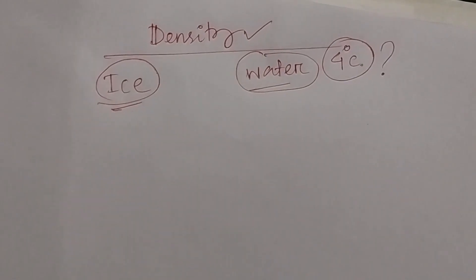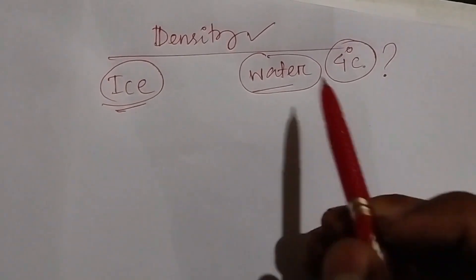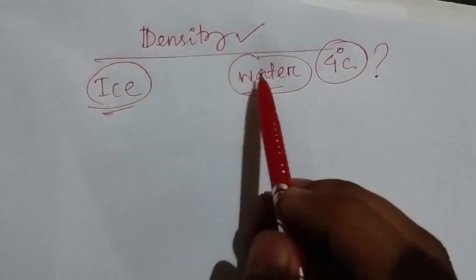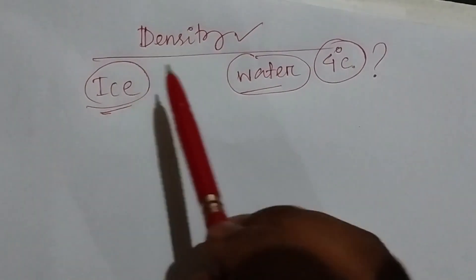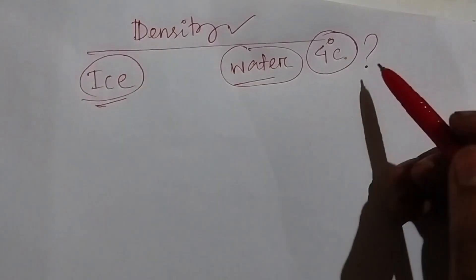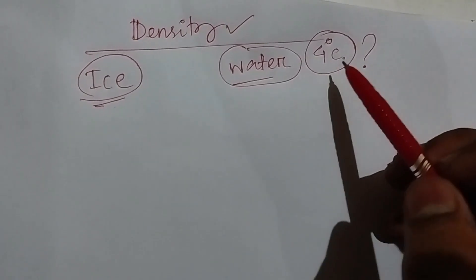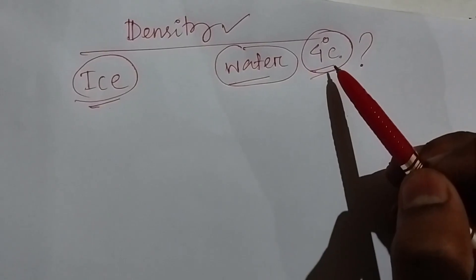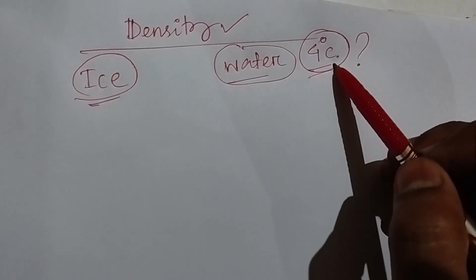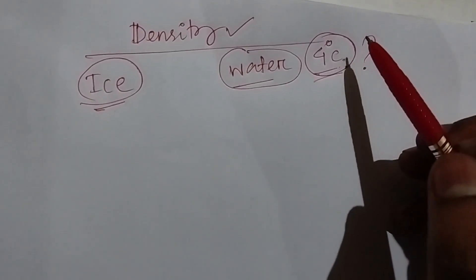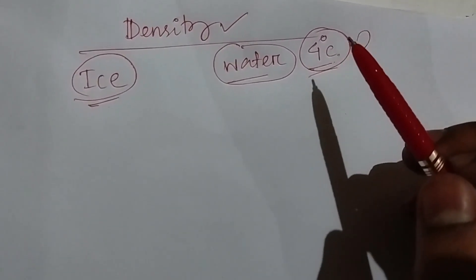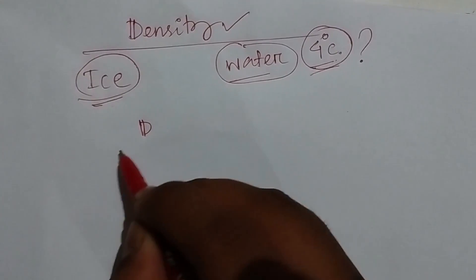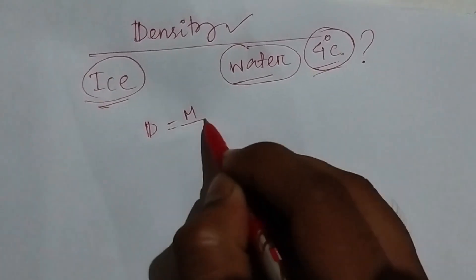Hello and welcome everyone, welcome to Aggregians platform. Today in this video I am going to tell you regarding the density of ice and density of water: what is the relationship between these two, which density is more, and why. We also go through the statement that the density of water is maximum at four degrees Celsius — what is the reason for that? Density is defined as mass upon volume.